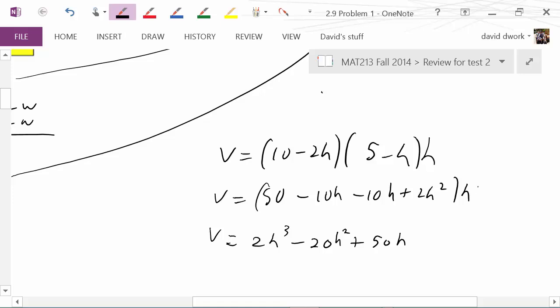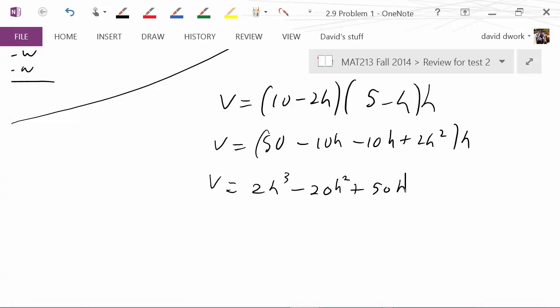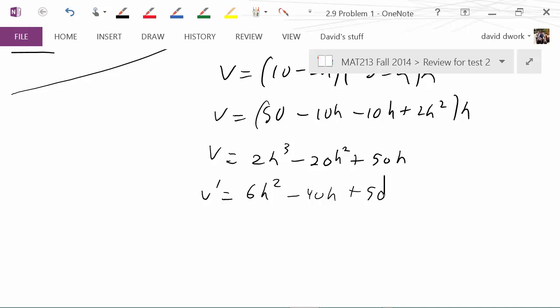I went ahead and distributed the binomials, then distributed my h and kind of rearranged it in descending order. Now the derivative of this seems like it wouldn't be too bad to do, so that's going to give me 6h² - 40h + 50. Whenever you're trying to maximize, the reason you take the derivative is you want to set that equal to zero.